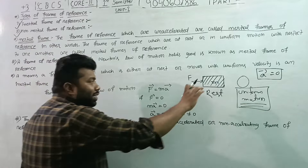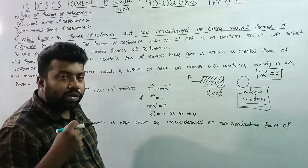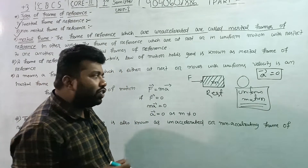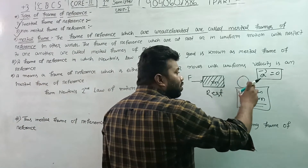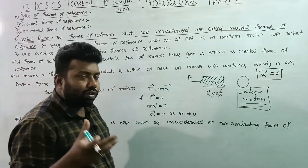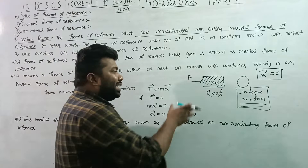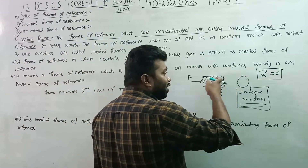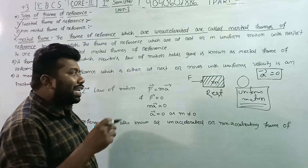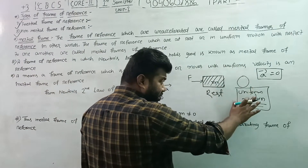If you have the object in constant position, then acceleration is zero, meaning the rest position. In the same way, when you have the object in uniform motion, then acceleration is zero. Acceleration is the change of velocity. In this condition, acceleration equals zero.